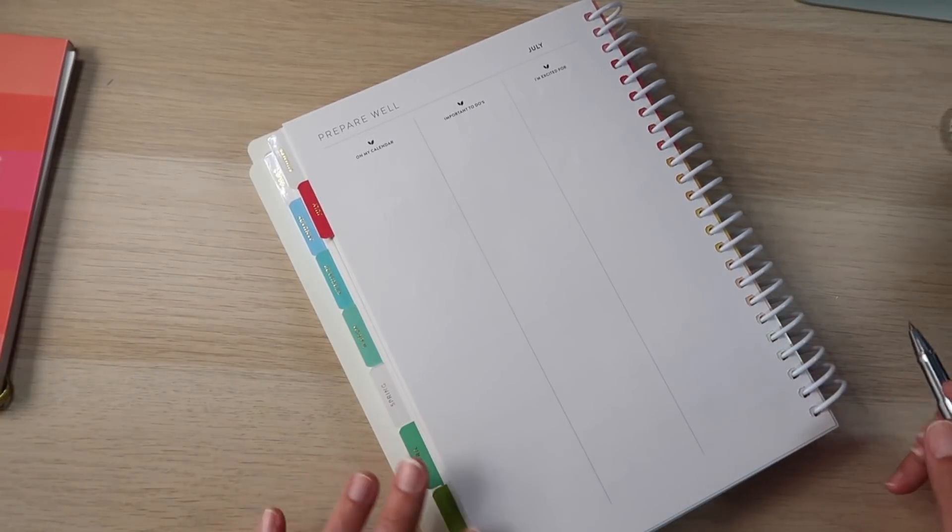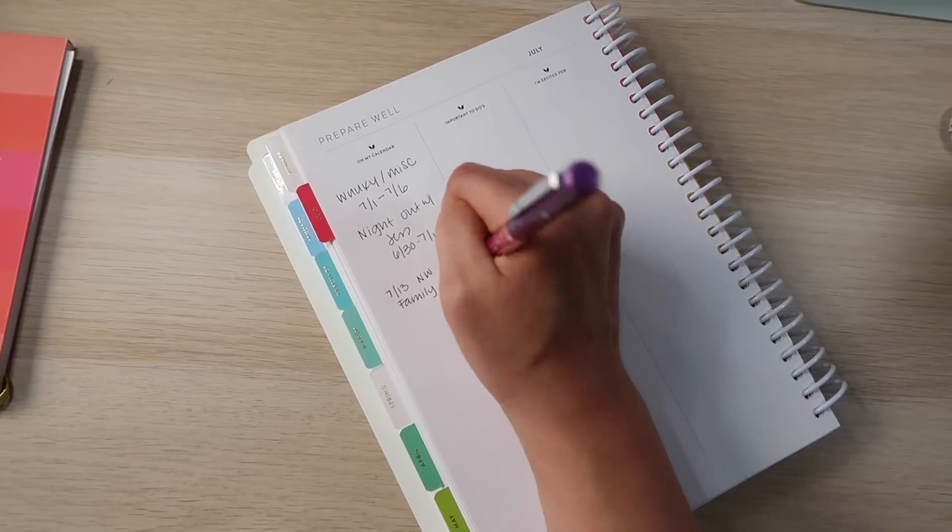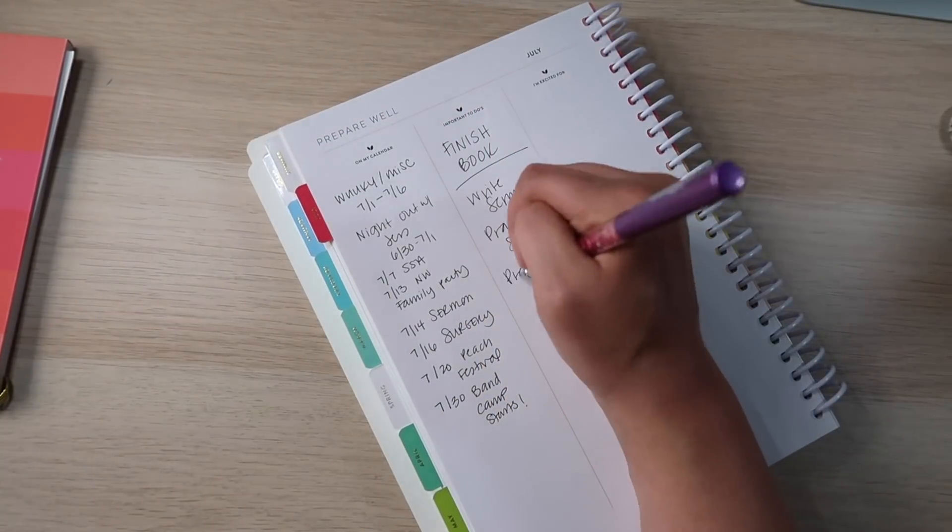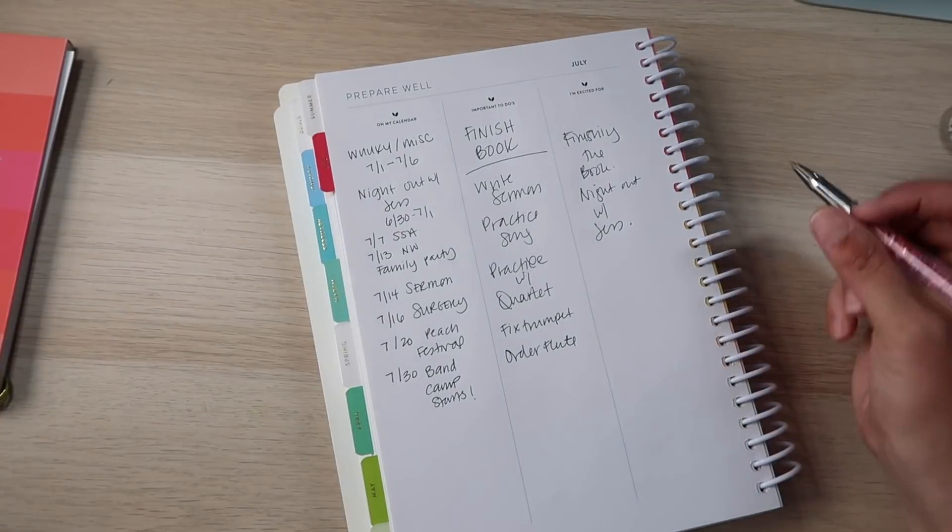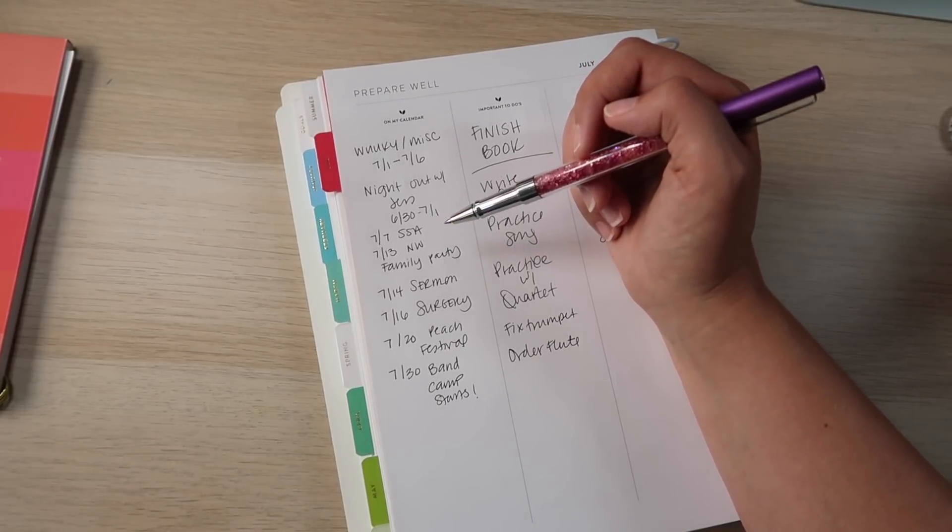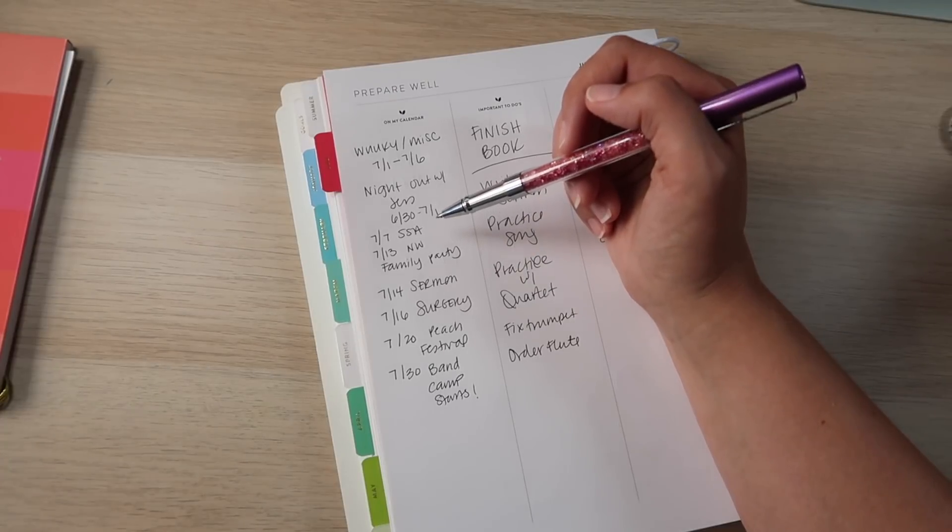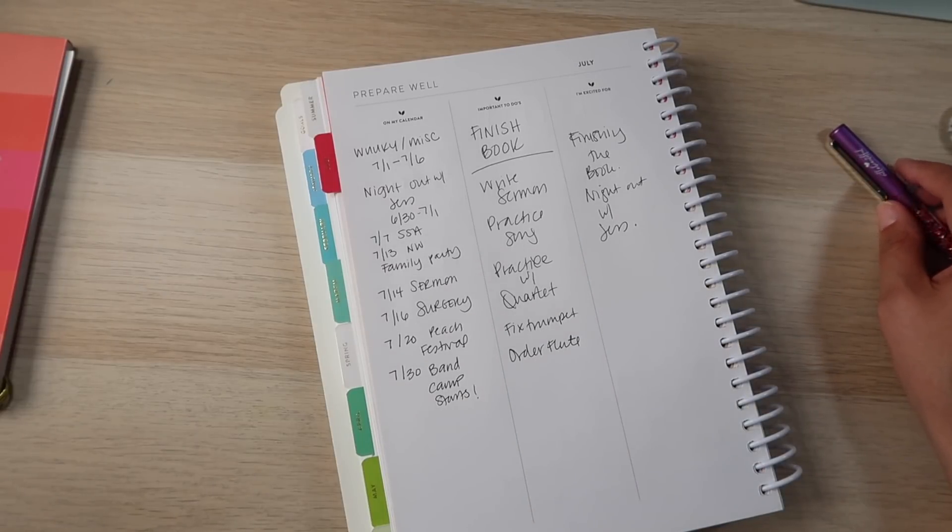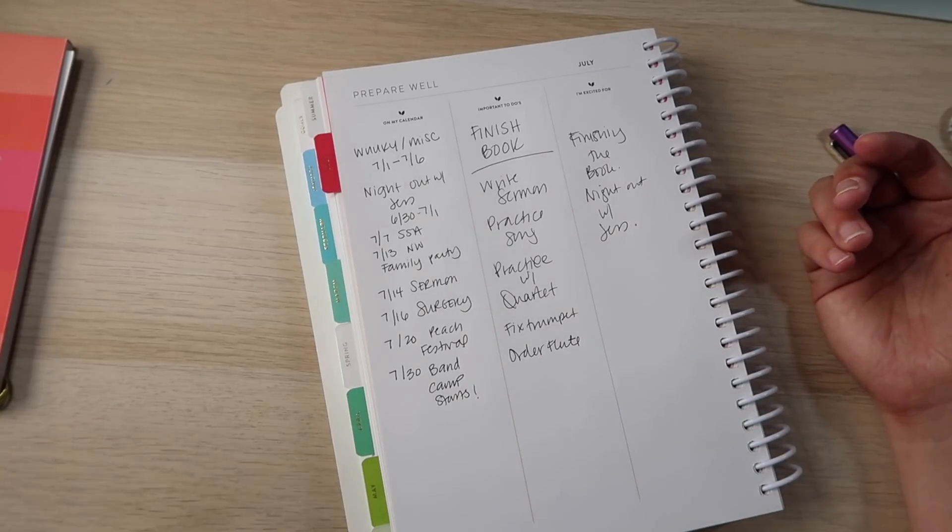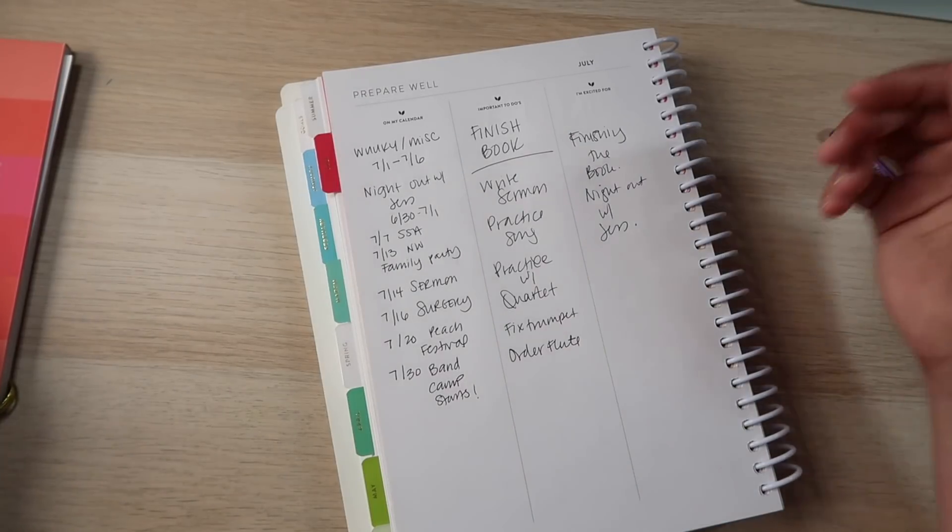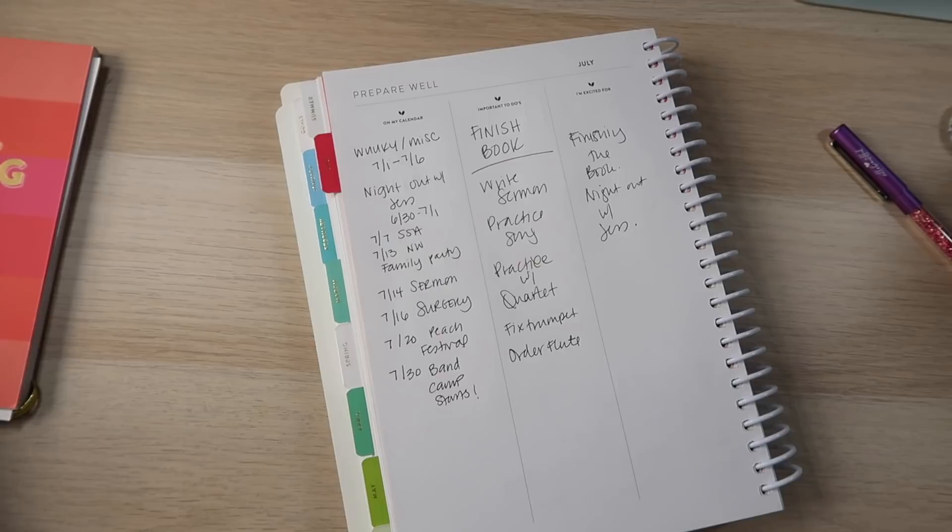All right, let's fill in this for prepare well. So here we go. My kids have camp. My husband and I are spending the night out when we drop them off at camp. I'm a Sunday service assistant at church one weekend. The second weekend, I am giving the sermon and singing. My husband's company has a family party. I have surgery. There's the peach festival, which we normally go to, but I don't think I'm going to be going to because it's going to be on the heels of my surgery. And then Katie starts band camp. The important news this month, finishing my book, writing my sermon, practicing the song for my sermon, practicing with my quartet for the fall, getting RJ's trumpet fixed and getting Katie's flute ordered because Katie needs a new flute. And I'm excited for finishing the book and my night out with Jesse and not much else. I'm really not excited about July. Not going to lie. I'm not going to make stuff up. I'm going to just be honest. I'm not excited. July is stressing me out. This was not a big enough indication of that.